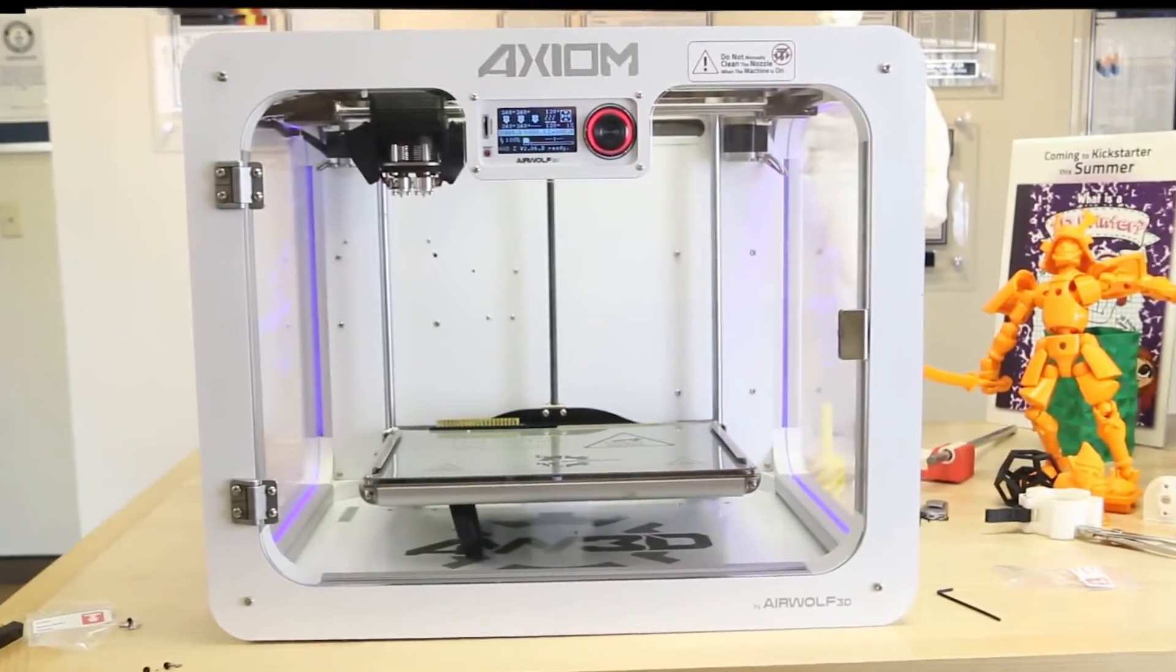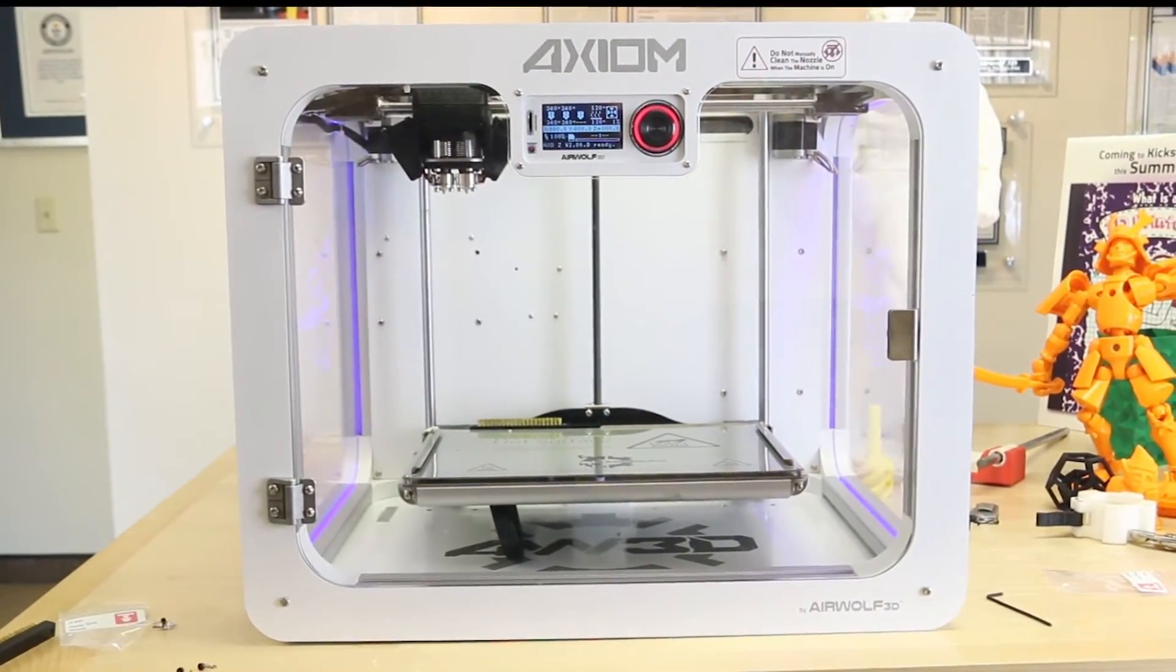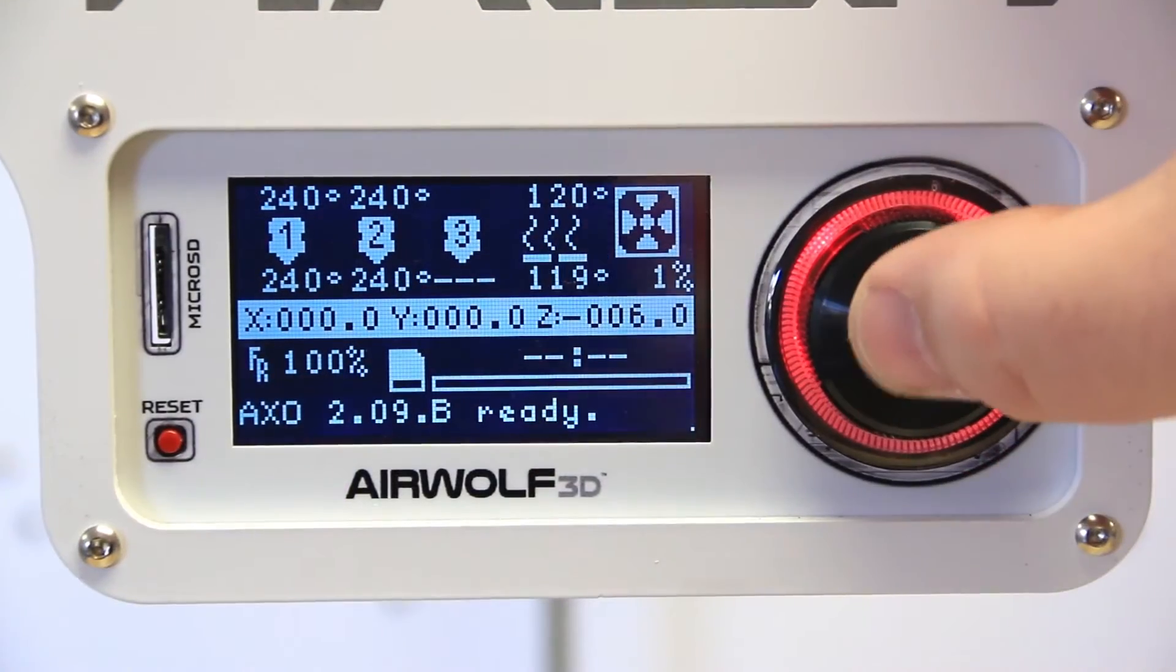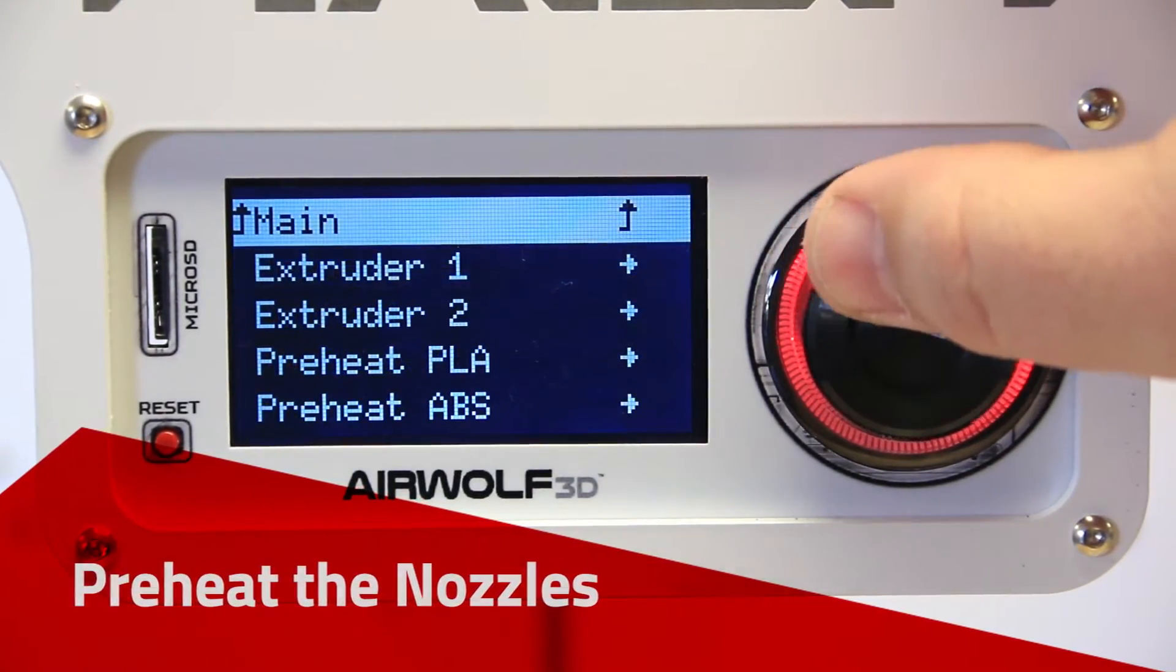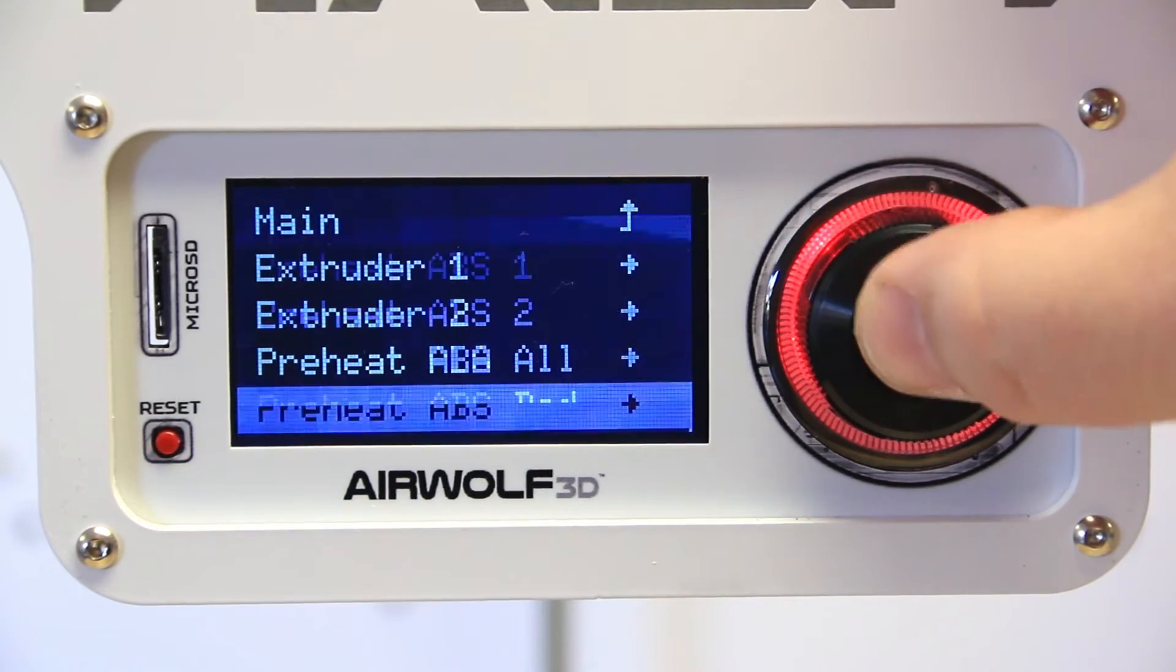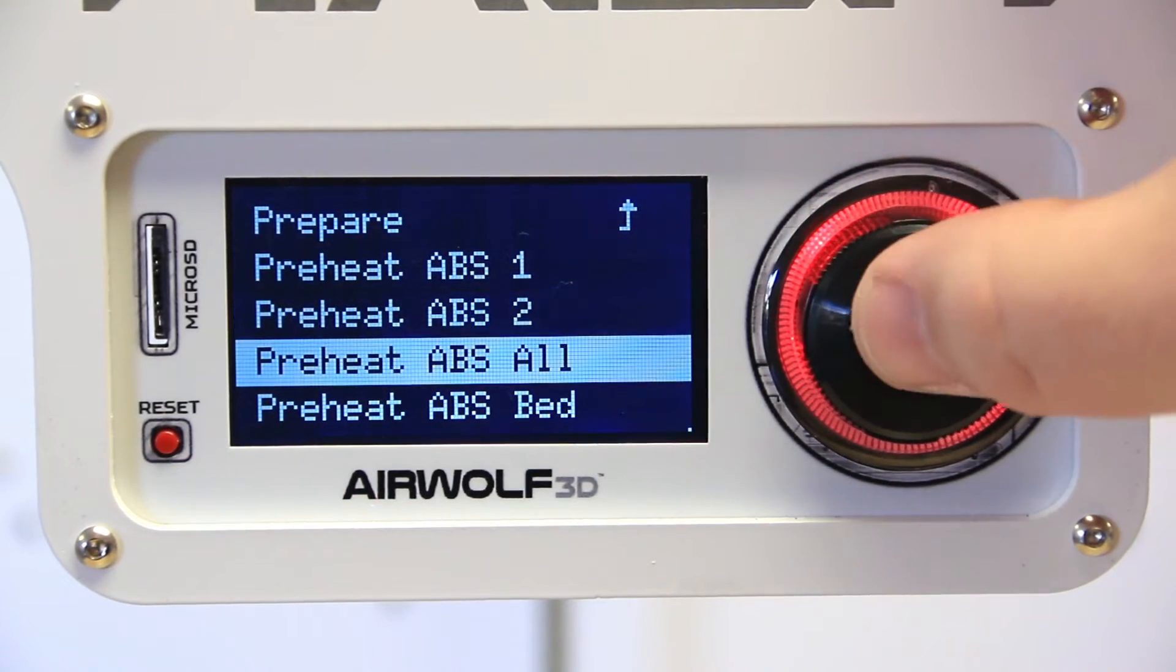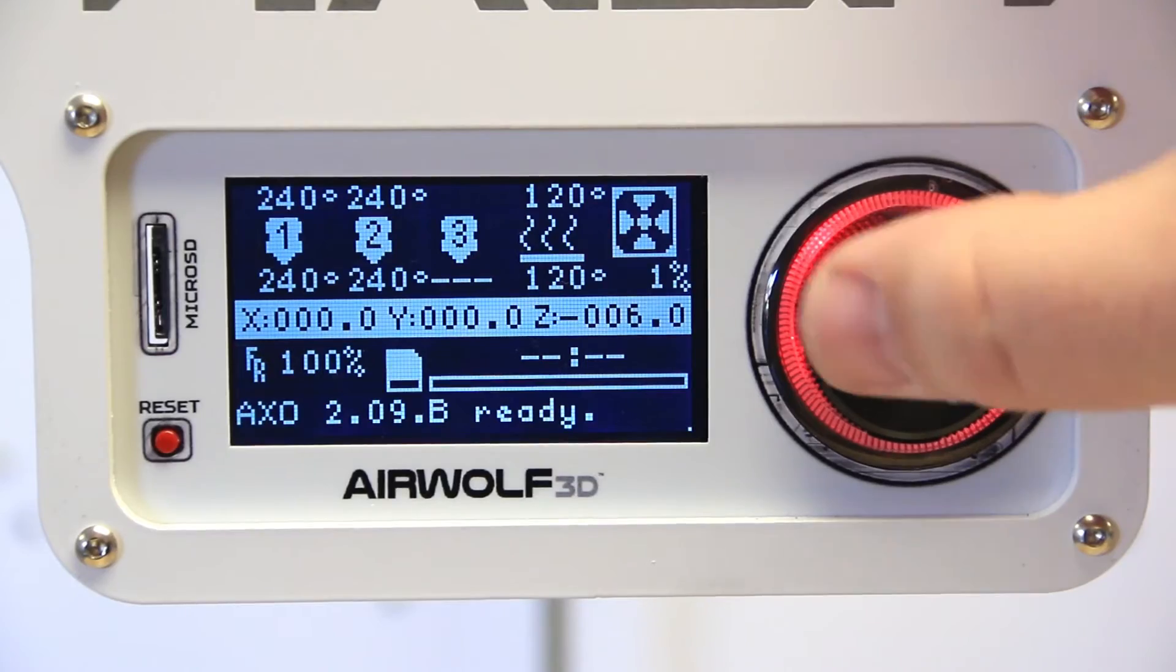This guide will instruct you on how to change the nozzle on your Axiom Series 3D printer. Before beginning, make sure to heat up the nozzle to the temperature of the filament you last used. For example, if you were printing ABS, heat up the hotend to 240 degrees.